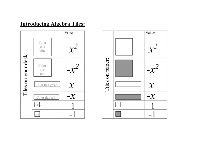Oftentimes we don't have the physical tiles, so we use tiles on paper. When using tiles on paper, we're going to have unshaded and shaded squares. The unshaded squares are our positives, and the shaded ones are all our negatives.